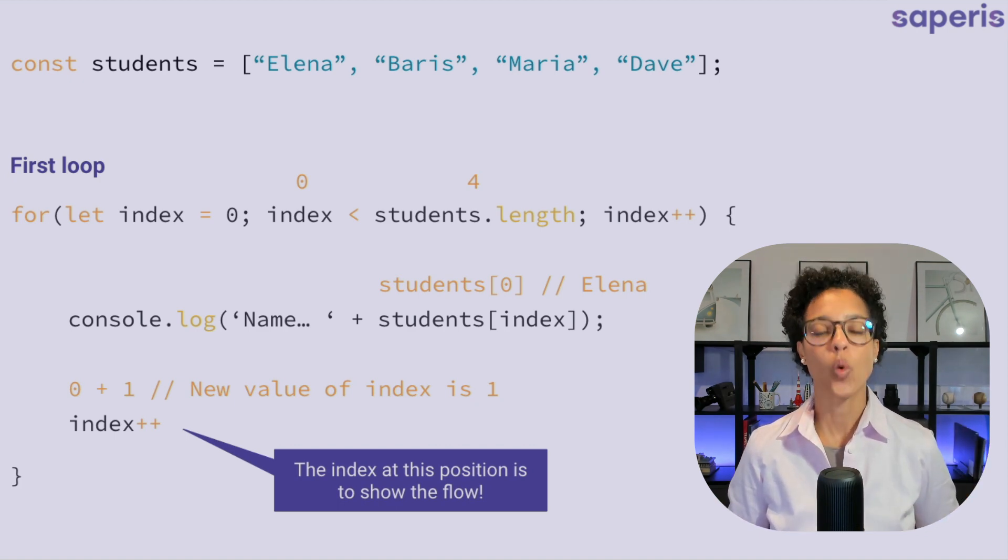So once we've logged out the student Elena, we add one to our index. So we're saying add to index, whatever is already in index and just increment it by one. So we're adding one.